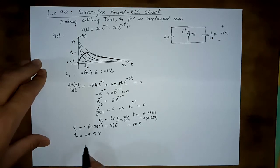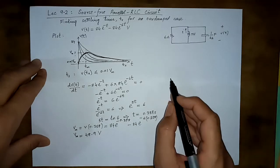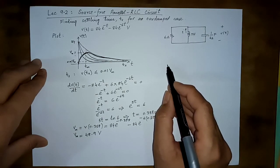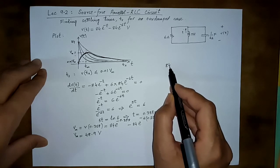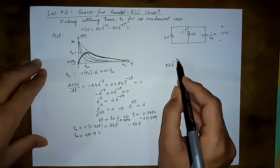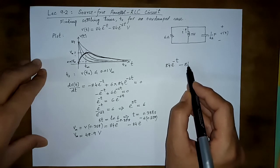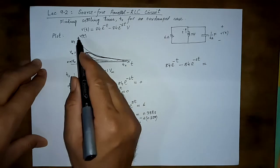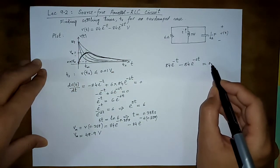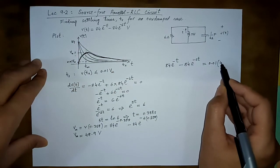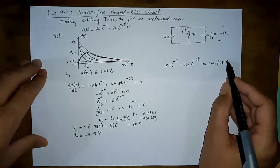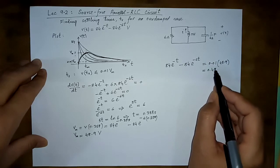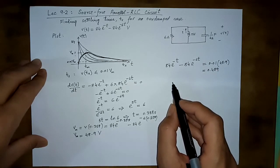So in finding the settling time, it will take a bit of mathematics. I think it will not be very easy to compute and find the value of time, the value of t where this vt becomes 0.01 the maximum value or 0.489.